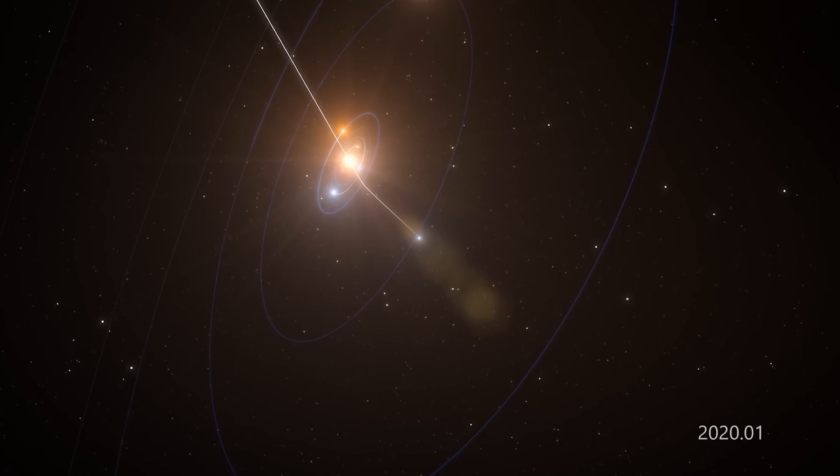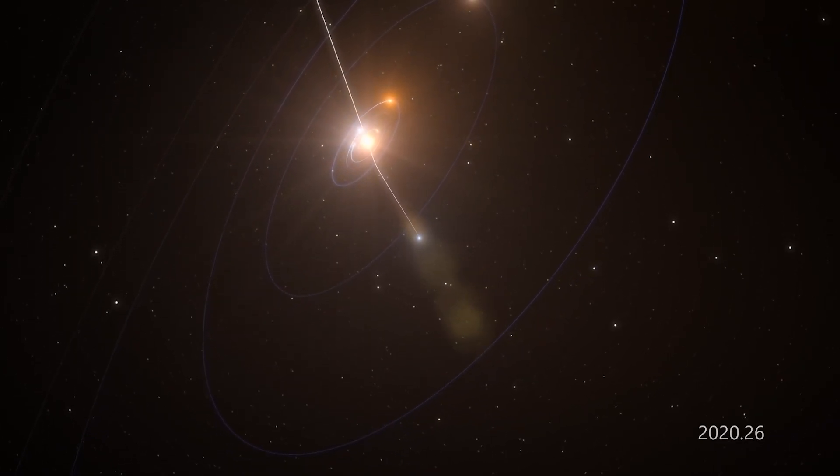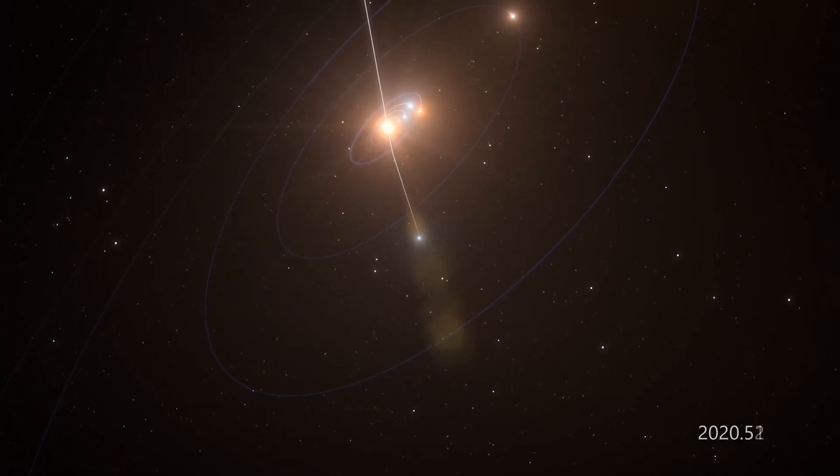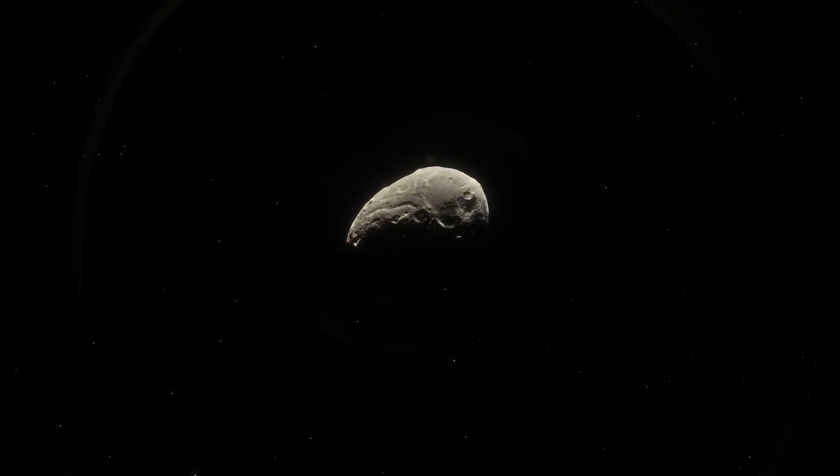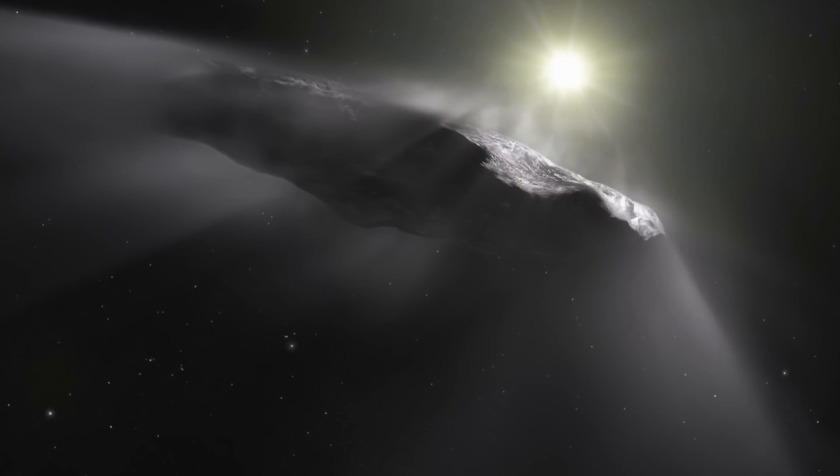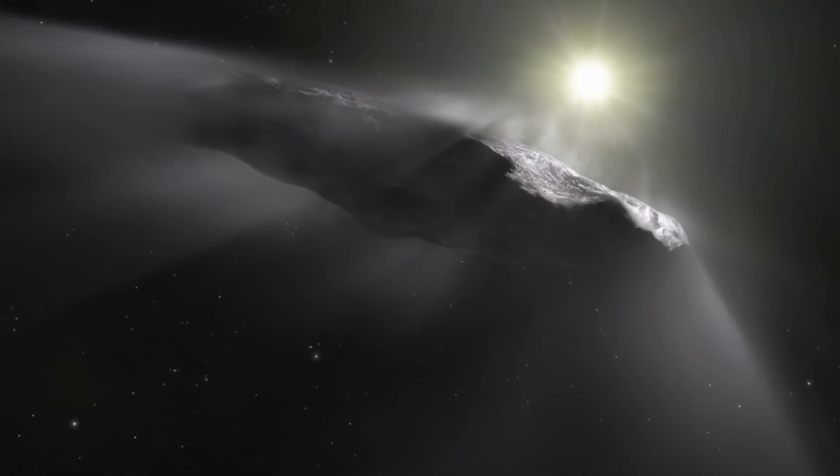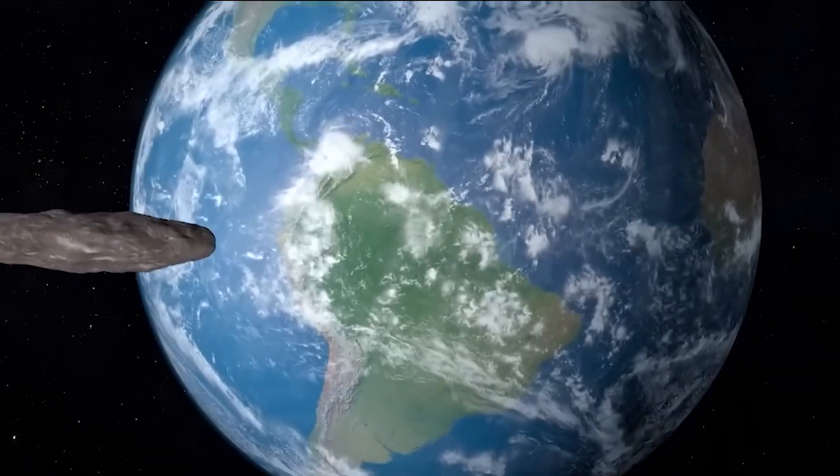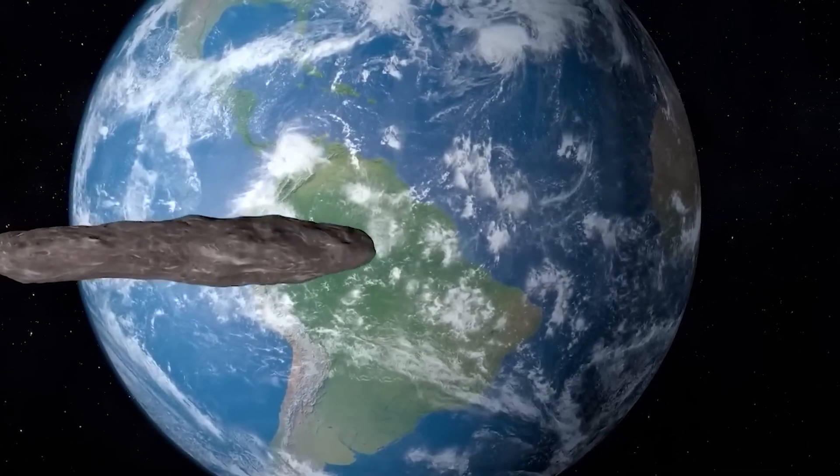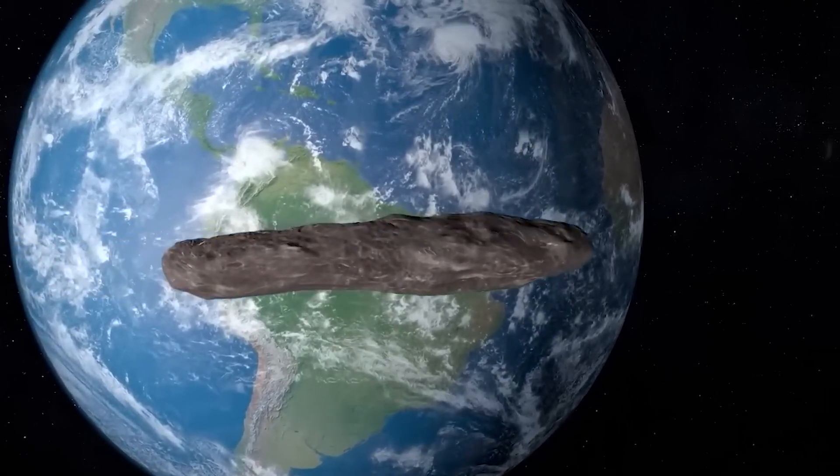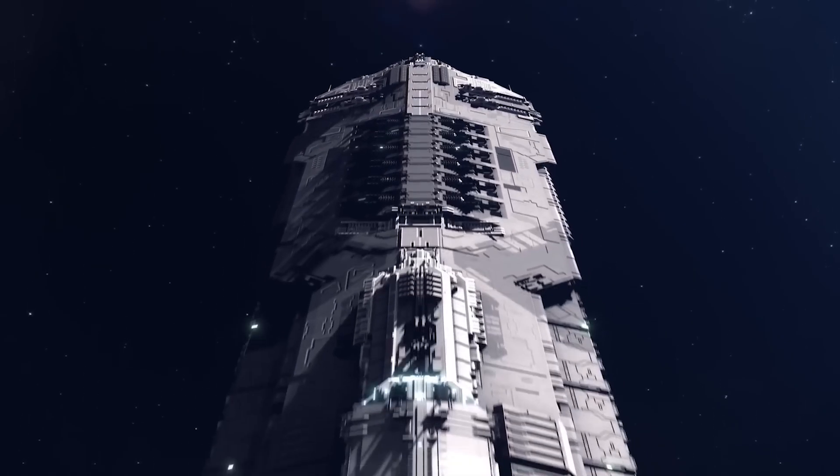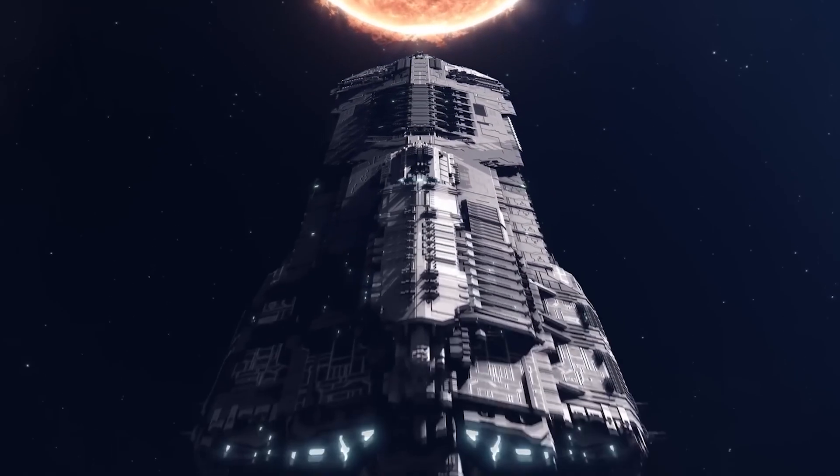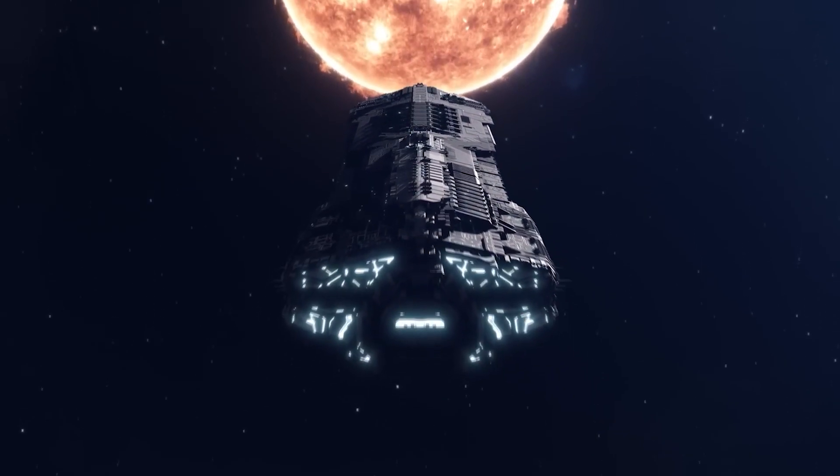Oumuamua could be a fully functional probe sent to the vicinity of Earth by an extraterrestrial civilization. This hypothesis was put forward in a report that has been accepted for publication in the Astrophysical Journal Letters. The possibility that Oumuamua has an artificial origin is contemplated. One theory suggests that it could be a light sail floating in interstellar space, conceived as an advanced technology that could be powered by solar radiation.